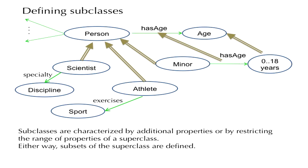Subclasses can also be characterized by restricting the range of a property of the superclass. Take the example of person, which has a number of properties including has age. Suppose we need to consider the subclass of persons that are scientists and another subclass of persons that are athletes. If a person is a scientist, an additional property might be the scientific specialty or discipline. If the person is an athlete, we may ask what sport the athlete exercises. So all scientists may be further described by the specialty property and all athletes by the exercises property — this is the way of adding local properties.